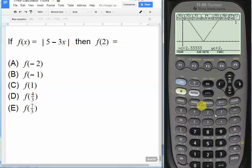So choice D is the correct answer, because when we plug in 4 thirds for x, we get an output of 1, which is the same as when we put in the value of 2 for x. It will also give us a y value of 1. So choice D is our correct answer.